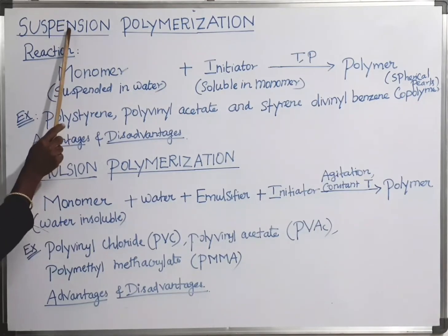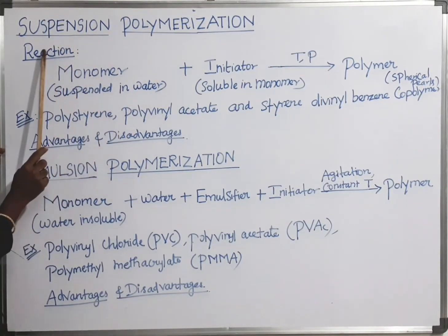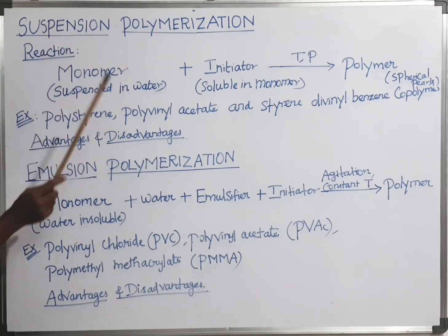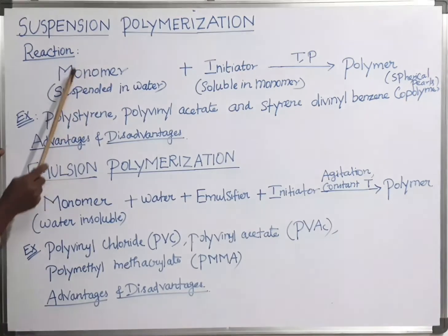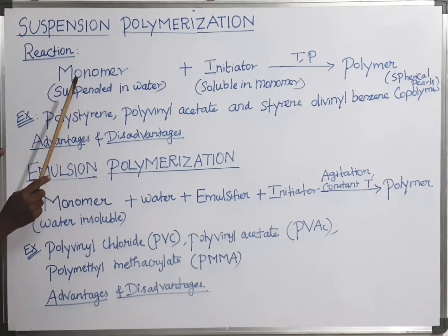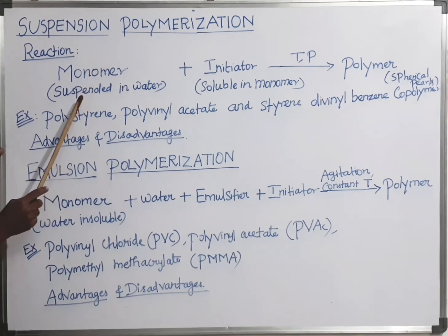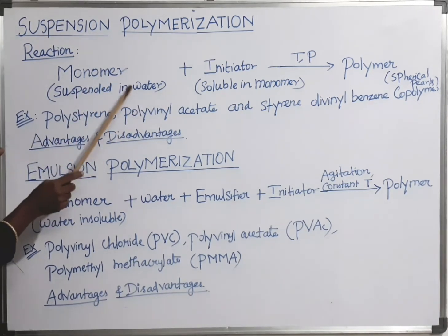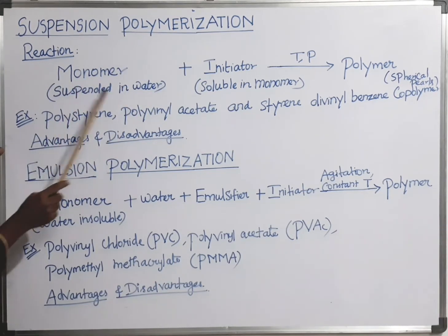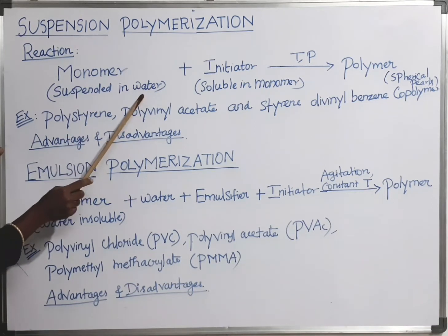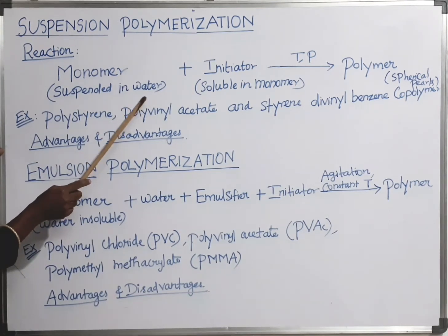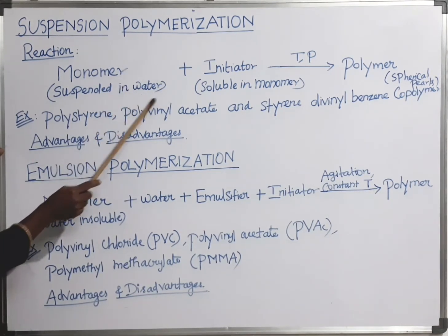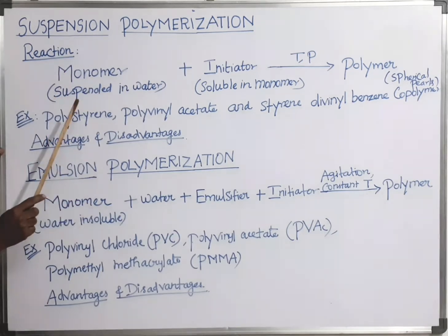First is suspension polymerization. In this polymerization, the monomer taken is insoluble in water. This water-insoluble monomer is suspended in water, where water is taken as the solvent. It is agitated to form monomer droplets.